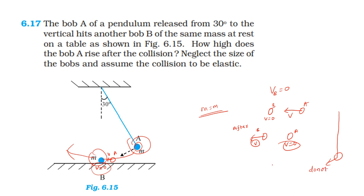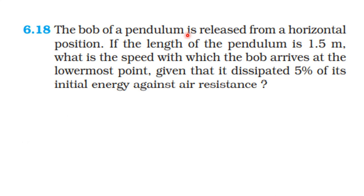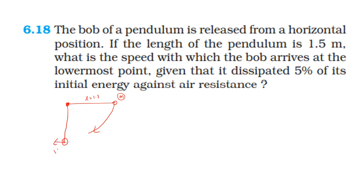The bob of a pendulum is released from a horizontal position. If the length of the pendulum is 1.5 meters, what is the speed with which the bob arrives at the lowermost point, given that it dissipates 5% of its initial energy against air resistance? The pendulum is placed at the horizontal position, so the pivot-to-bob length is 1.5 meters.